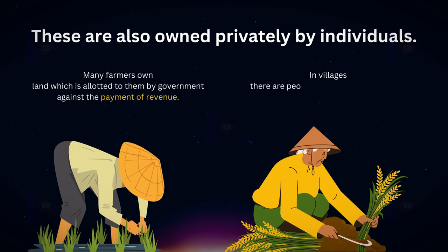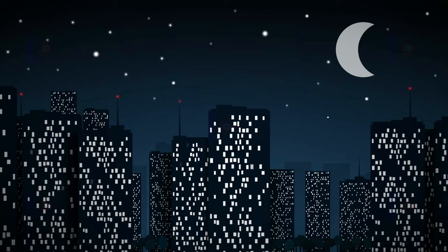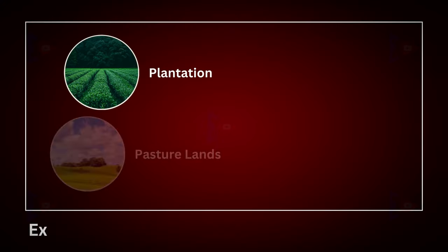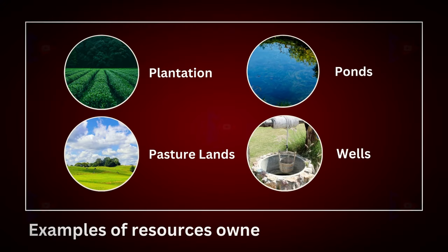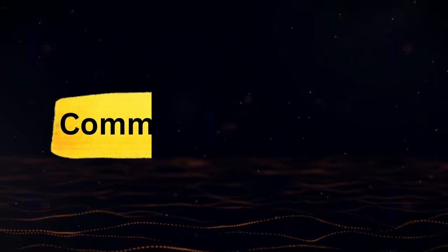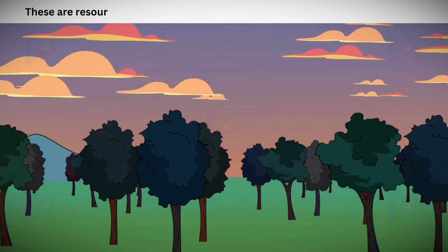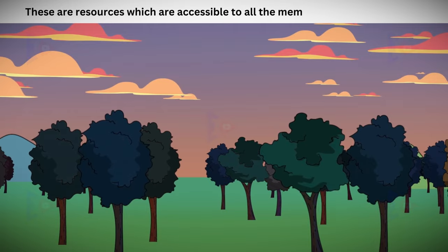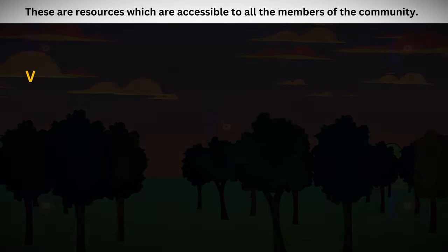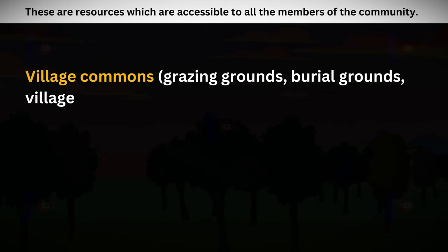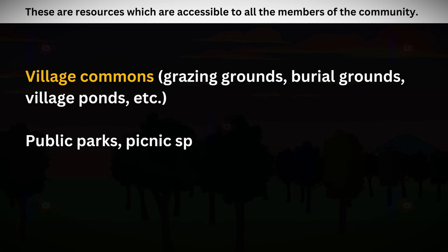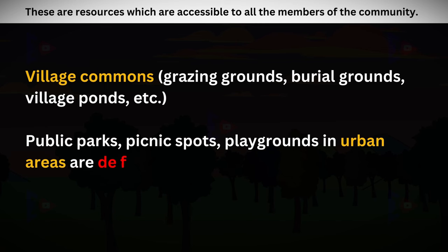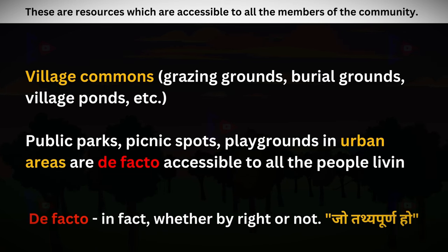In villages there are people with land ownership but also many who are landless. Urban people own plots, houses and other properties. Plantation, pasture land, ponds and water in wells are examples of individual resource ownership. Community owned resources are accessible to all members of the community — village common grazing grounds, burial grounds, village ponds, parks, picnic spots and playgrounds in urban areas are accessible to all people living there.